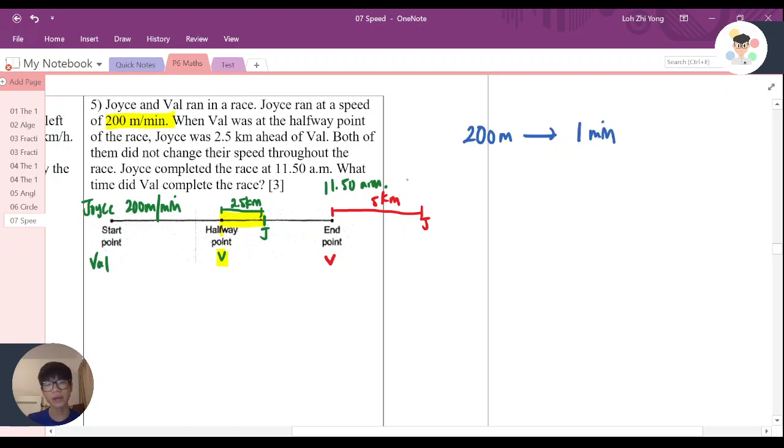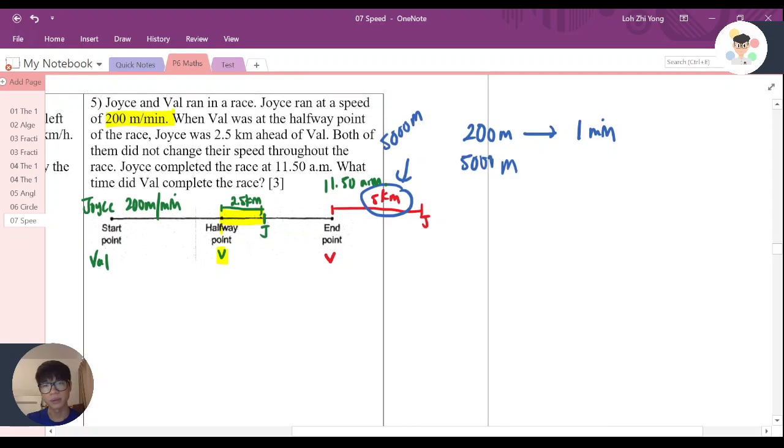Now, if it's actually 5 km distance, what's the time that it will cost? Just assume 5 km is 5,000 meters, right? So it will be 5,000 meters.